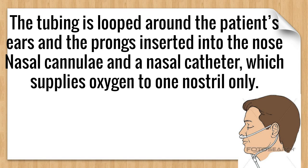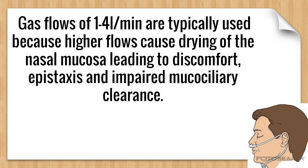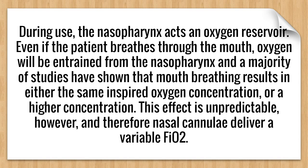How it works: the tubing is looped around the patient's ears and the prongs inserted into the nose. Gas flows typically at a rate of 1 to 4 liters per minute, because if you increase the liters of oxygen more than 4, it can lead to drying of the nasal mucosa, which will be very uncomfortable for the patient.